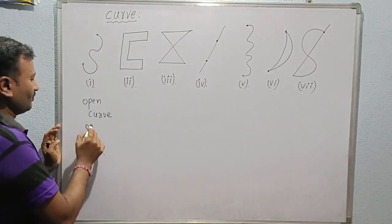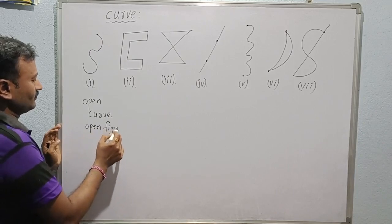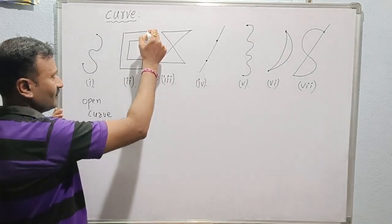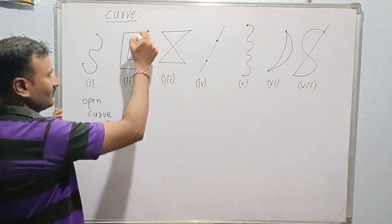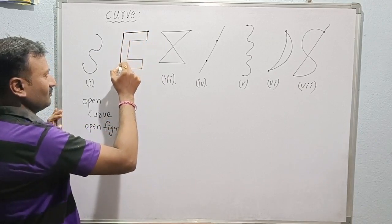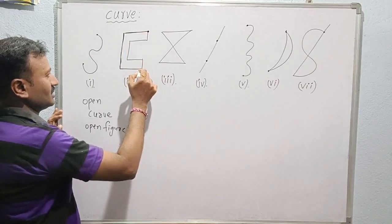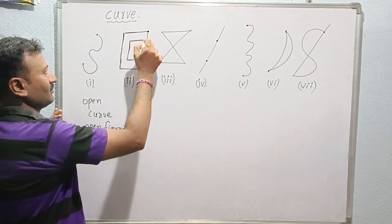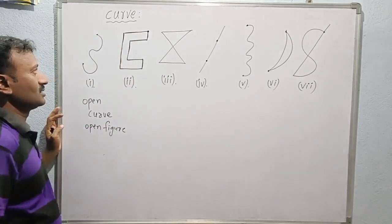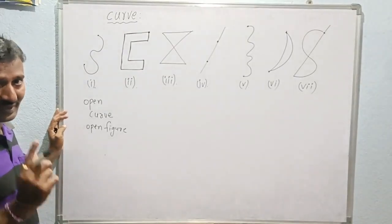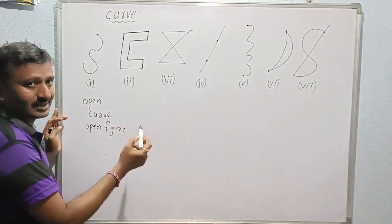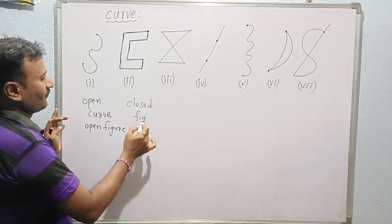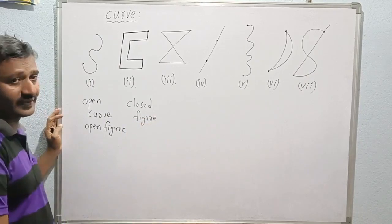Let us observe the second figure. Whenever we start drawing from a particular point and go along the border, the line we previously drew is what we return to, so the starting point and ending point meet at one point only. So we can say this is a closed figure.